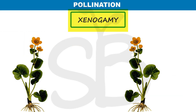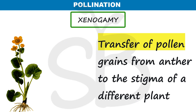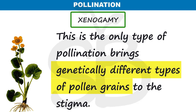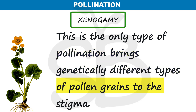The third type of pollination is xenogamy. This involves pollination between different plants — that is, the transfer of pollen grains from the anther to the stigma of a different plant. This type of pollination brings genetically different pollen grains to the stigma, resulting in genetic variation. Xenogamy is the only type of pollination that brings genetically different pollen grains to the stigma.